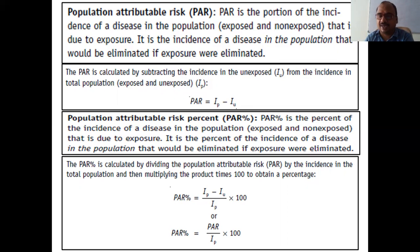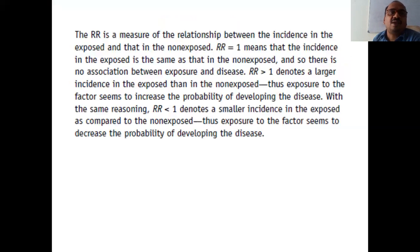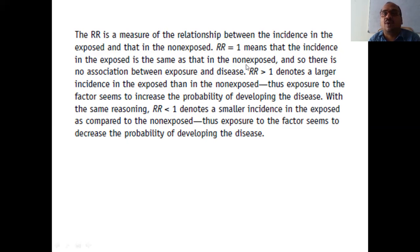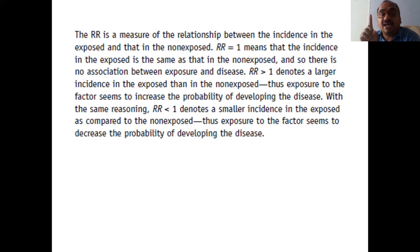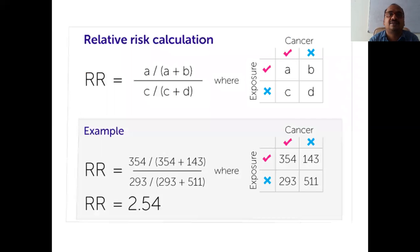Relative risk is a measure of association between a disease and a factor under study — incidence in the exposed divided by incidence in the non-exposed. Three conditions to remember: if RR equals 1, incidence in exposed equals that in non-exposed — no difference. If RR is greater than 1, larger incidence in the exposed — dangerous exposure. If RR is less than 1, smaller incidence in the exposed.